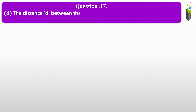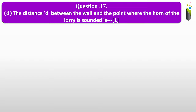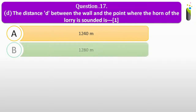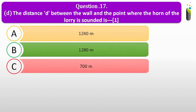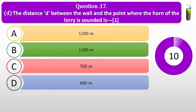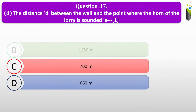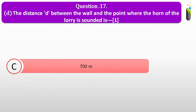Question number seventeen D. The distance D between the wall and the point where the horn of the lorry is sounded is 700 meters.